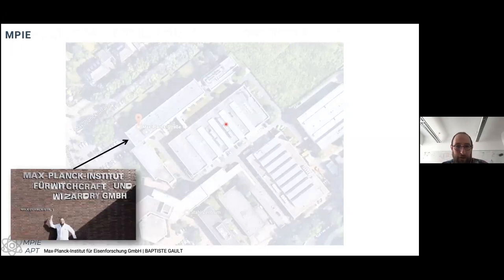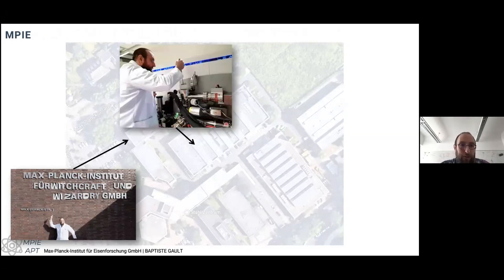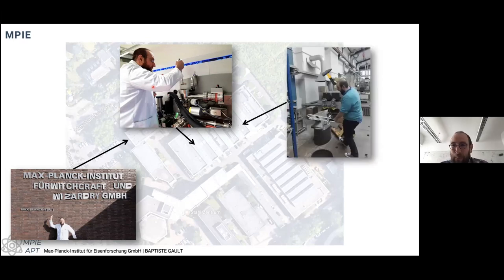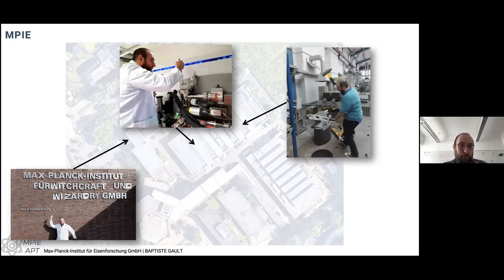The institute has a beautiful red brick 1930s building. That's where we do atom probe — though I typically sit in a chair and support the people in my group rather than operate the instrument myself. We also have forging facilities. Essentially we make new materials, test them, and then go down to atomic scale characterization to understand the different processes and properties of the materials.